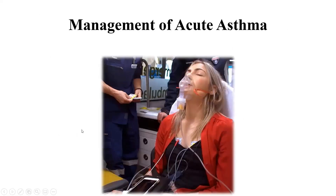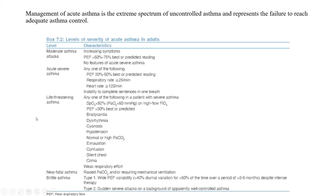Now the final part: management of acute asthma. In a moderate asthma attack, the peak expiratory flow is 50 to 75%. In acute severe asthma, peak expiratory flow decreases to 30 to 50% - normal being above 75% for any patient. In life-threatening asthma, there is also deterioration of oxygen saturation.